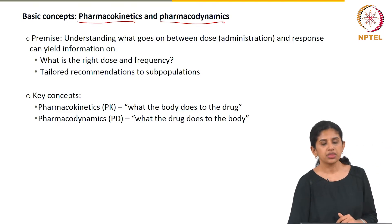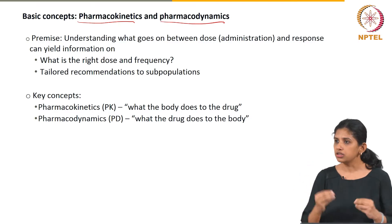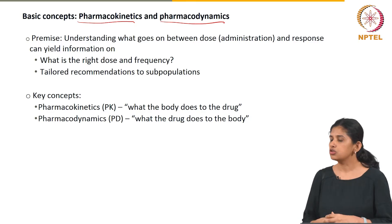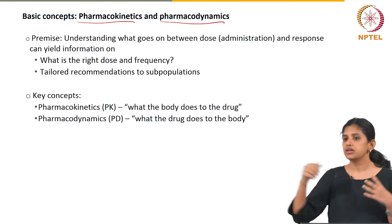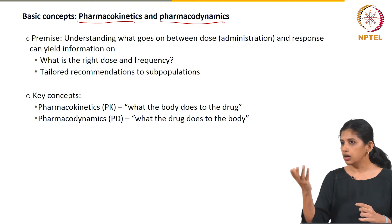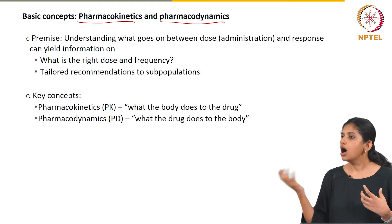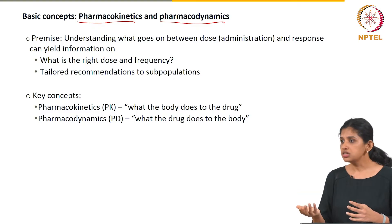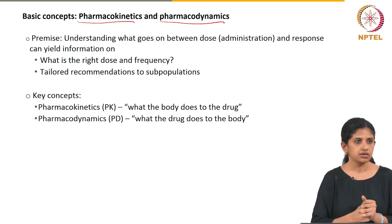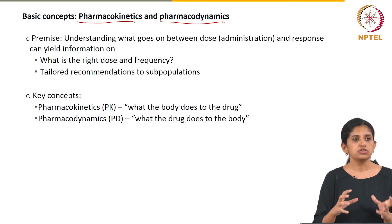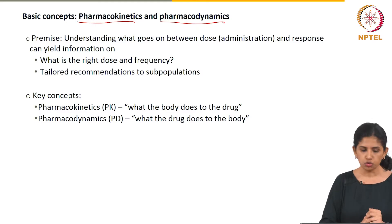The next concept is pharmacodynamics. Once all the processing has happened to the drug you have injected, what does it do to the body? What part of the body does it hit? For painkillers, the target is the nervous system. For an asthma drug, the blood vessels in the lung, the alveoli and those structures are what it goes after. When you inject insulin, the targets are insulin receptors in various organs — muscle, liver, etc. What the drug does to the body is pharmacodynamics.